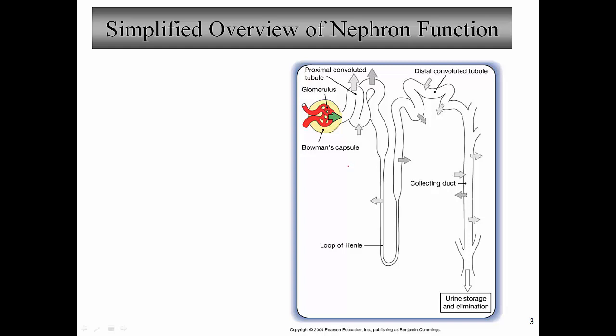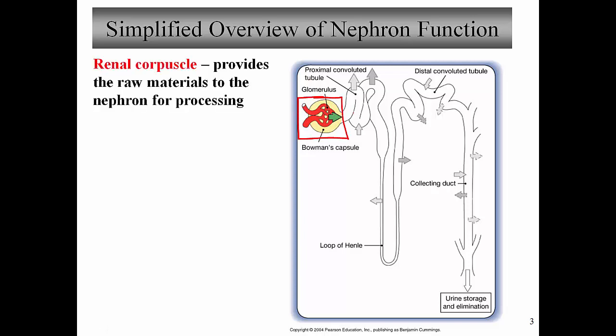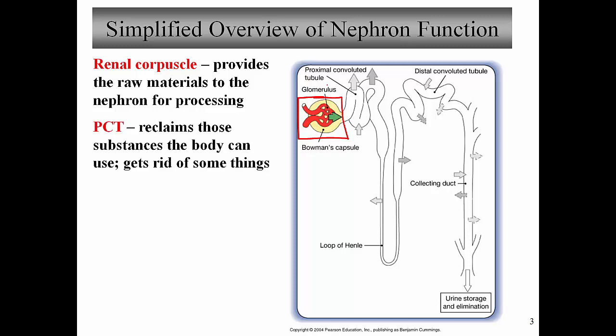Let's begin with a simplified overview of nephron function. We've already talked about how filtrate is formed and how the filtration process is regulated. This filtrate is the raw material provided to the proximal convoluted tubule and other parts of the nephron, and will be processed to eventually make urine. The next segment is the proximal convoluted tubule, or PCT. These cells are specialized to reabsorb by virtue of the microvilli on their surface. When material makes it into the PCT, it's no longer called filtrate — it's now called tubular fluid, until it eventually makes it out as urine.